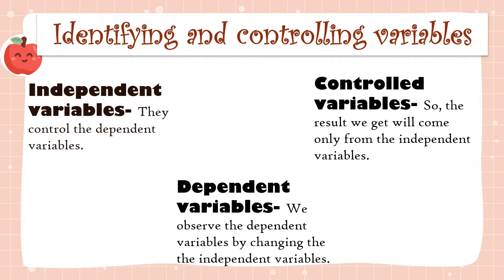I will explain some of them. The first one is identifying and controlling variables. Variables have three parts. The first is the independent variable — we control the independent variable. Number two: control variables, so the result we get will come only from the independent variable.